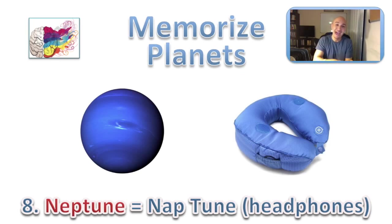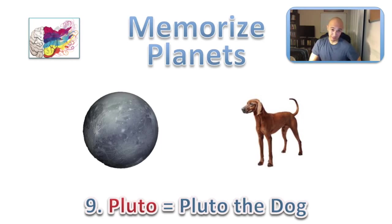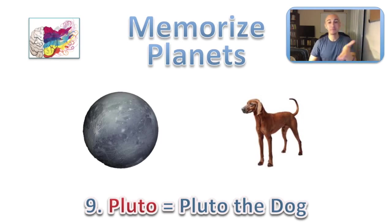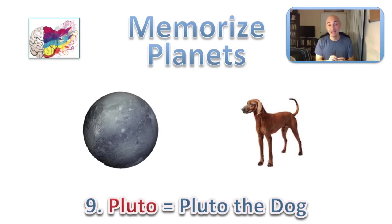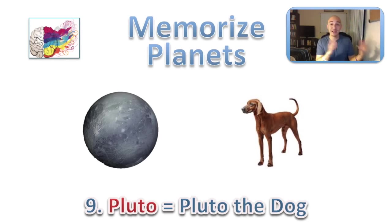Ninth is Pluto. For copyright purposes I won't name the specific cartoon dog, but just picture Pluto the dog on your ninth location — a representation for the ninth planet, now a dwarf planet. Maybe the dog is rolling around or tearing up that ninth location, doing something wild. Picture that vividly.